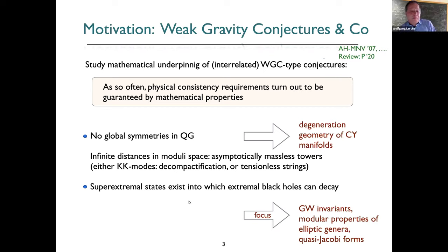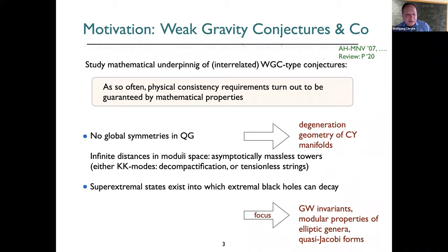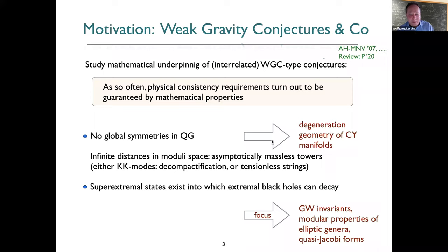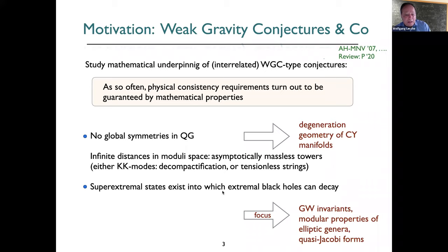Important examples include the conjecture that there should be no global symmetries in quantum gravity, and that infinite distances in moduli space should lead to asymptotically massless towers of states, which could be KK modes or tensionless strings. There is also a statement that super-extremal states should exist — into which extremal black holes can decay to avoid massive remnants — and that is tied to modular properties of Jacobi forms, elliptic genera, and geometric properties of elliptically-fibred Calabi-Yau manifolds.